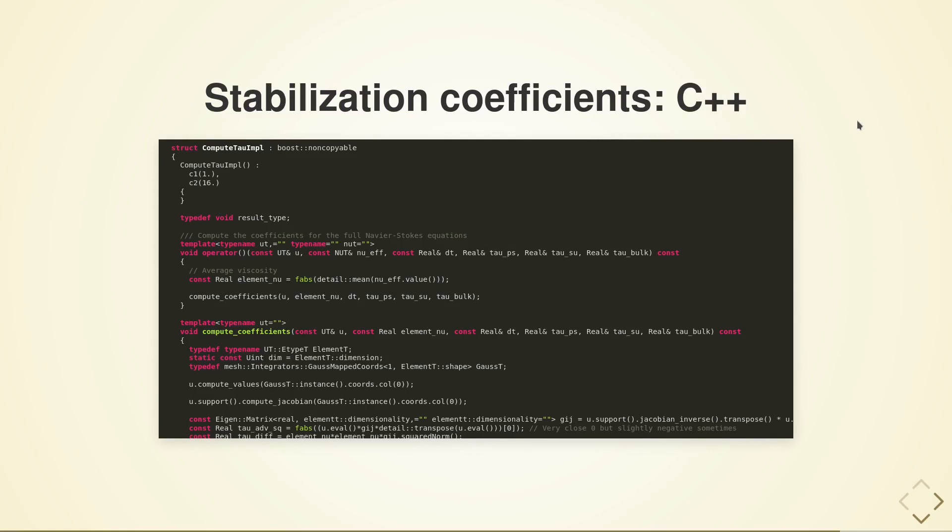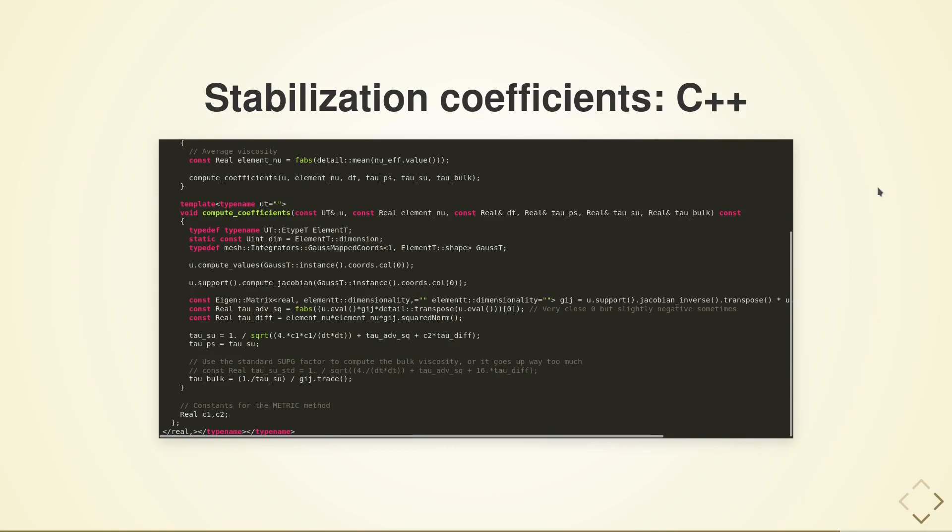Stabilized finite elements, perhaps unsurprisingly, rely on the use of stabilization coefficients. These are computed on a per-cell basis, and thus some kind of function to compute them must be introduced into the expression. In C++, breaking into the expression template code with a user-defined function like this requires a lot of boilerplate code, as can be seen in this example.